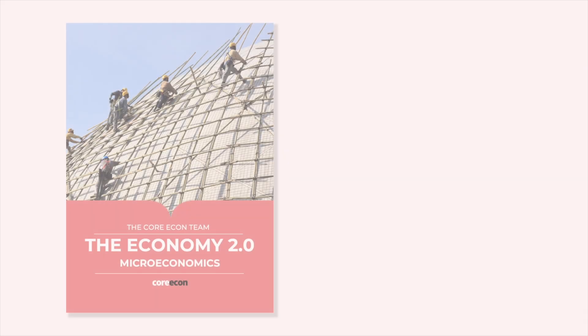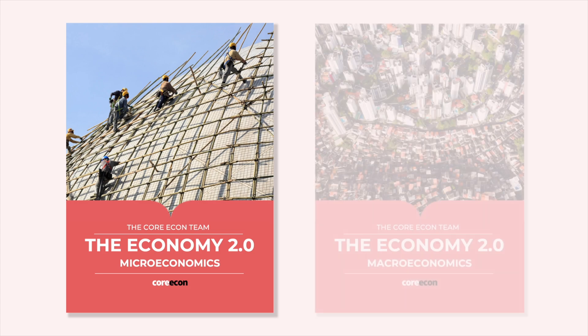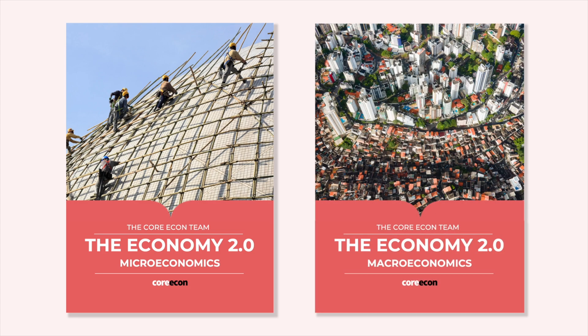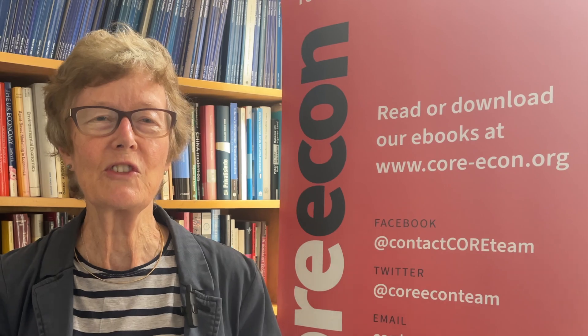What we've done in the rewrite is to divide the economy into two volumes — a microeconomics volume and a macroeconomics volume — which makes it easier to fit with typical teaching assignments. We've taken on board a lot of feedback from our users, that's from instructors and from students, and we've made the text much more succinct. We've cut the word count and streamlined the model building throughout.